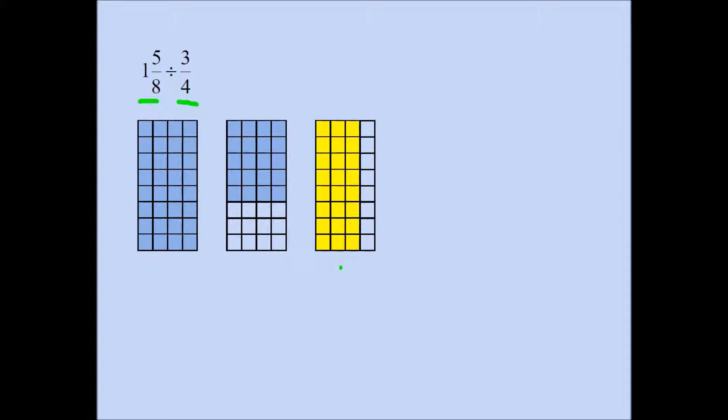Recall this is 3 fourths and this whole, this entire portion is 1 and 5 eighths. So we are asking, how many times this goes into this. Now instead of saying this and this, let's say we are essentially asking how many times the yellow rectangle can be used to cover the blue pieces. Clearly, the yellow rectangle will fit here once.